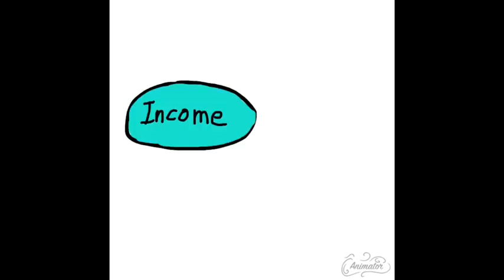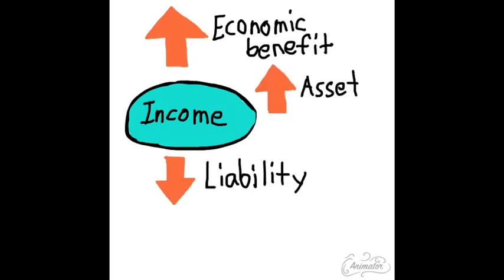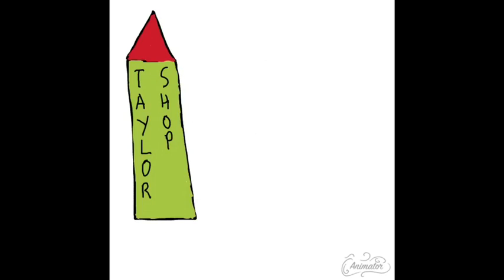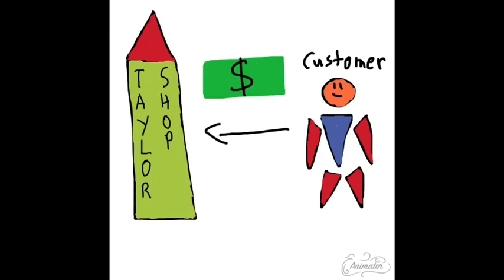The next one is income. An income is an increase in economic benefit during the accounting period in the form of inflow or increase in asset, or decrease in liability, which results in an increase in equity. This could happen every time Tailor Shop has sold an item to a customer, resulting in the company receiving a payment — leading to an increase in assets.